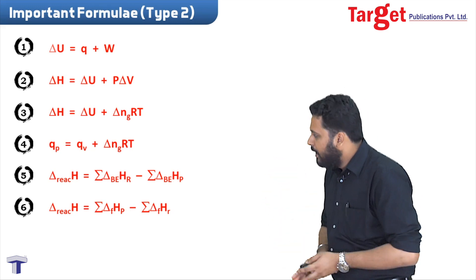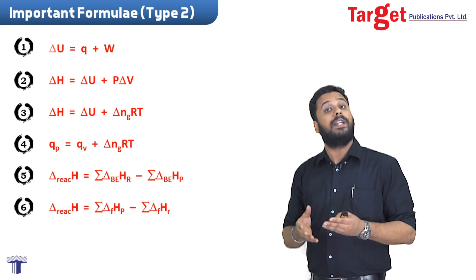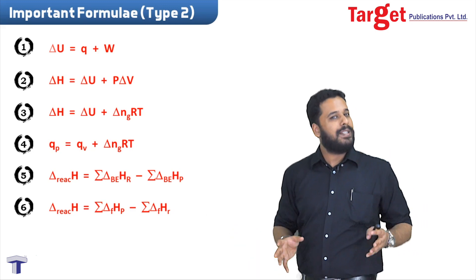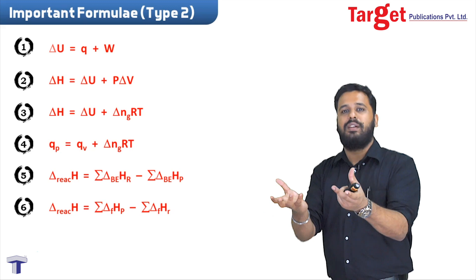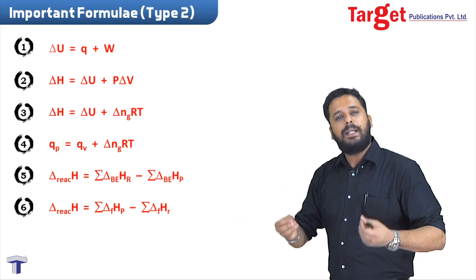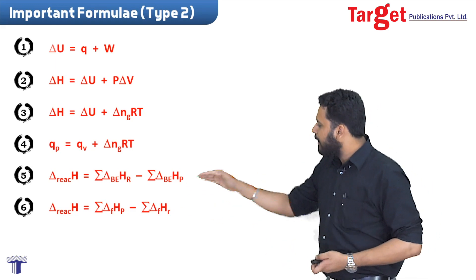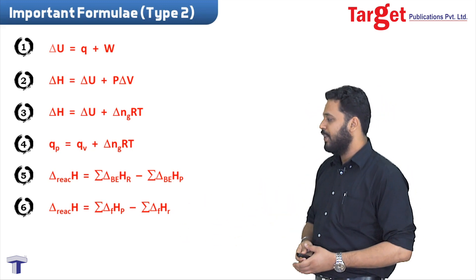And the same thing we can see in terms of enthalpy of formation, where it becomes product minus reactant. We've seen the reason why one has reactant minus product and the other has product minus reactant. We saw that enthalpy of formation talks about formation while bond enthalpy talks about breaking of bonds - they are essentially the opposite of one another.